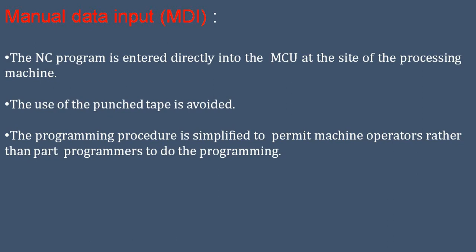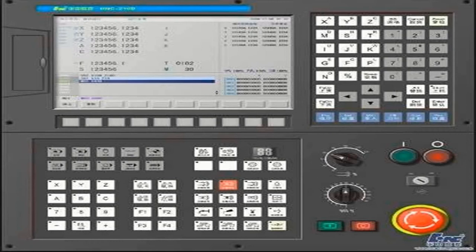Third type is manual data input (MDI). The numerical control program is entered directly into the MCU at the site of the processing machine, and the use of the punched tape is avoided. The programming procedure is simplified to permit machine operators, rather than part programmers, to do the programming. This is the panel through which we can feed the programming data to the machine.